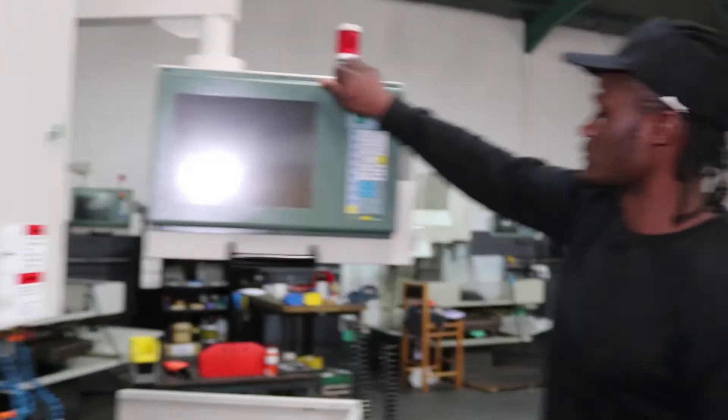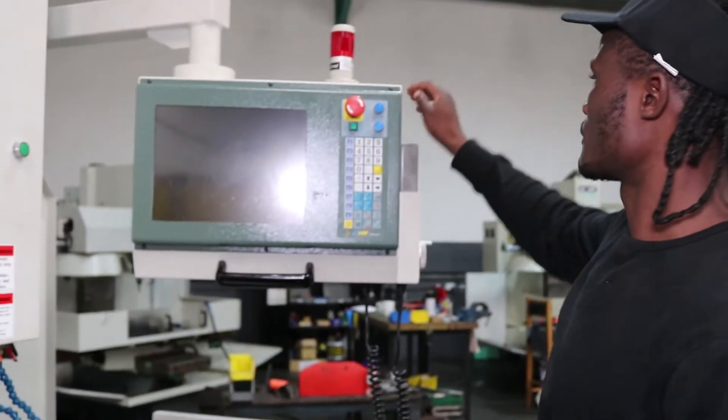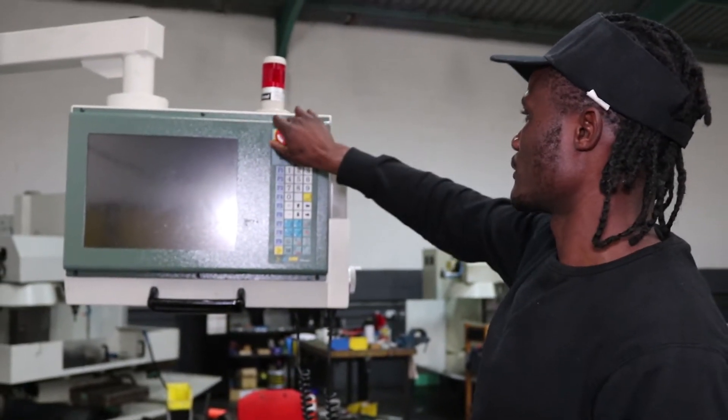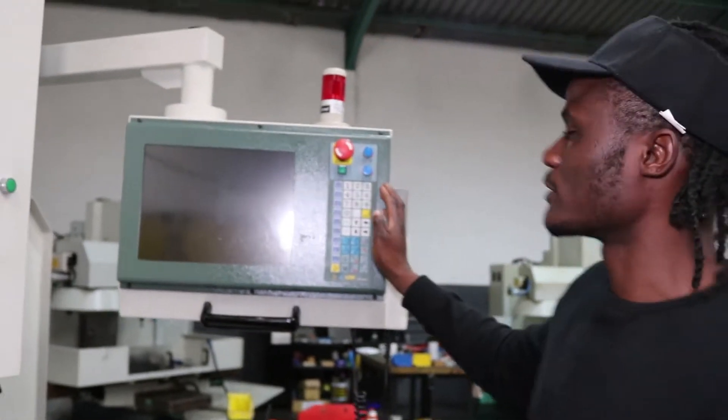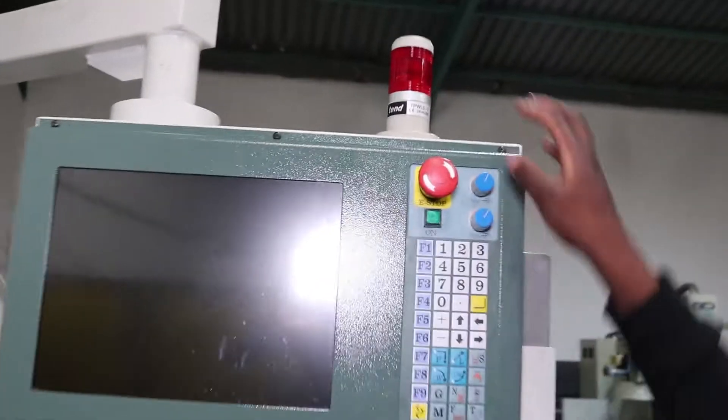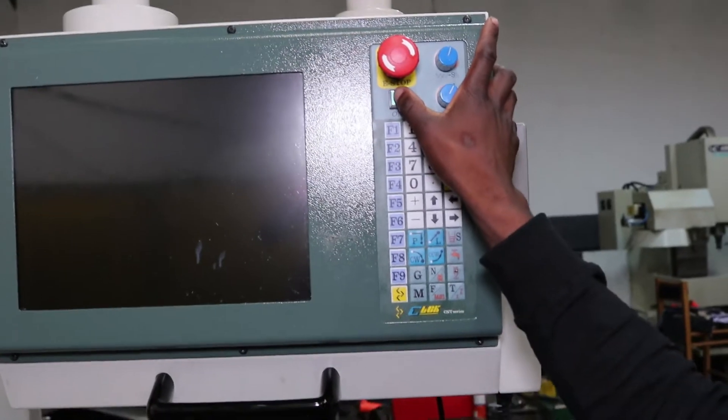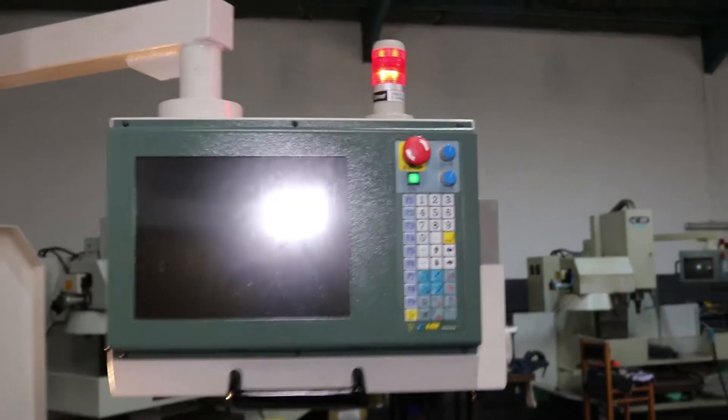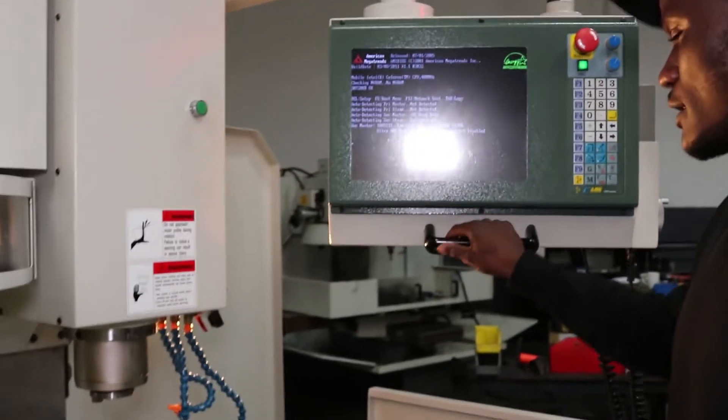Here with the emergency button, sometimes it can be pressed down. So you have to kind of twist it and lift it up. Then there is your on button. So you press that. You can see the light. The machine is now running.